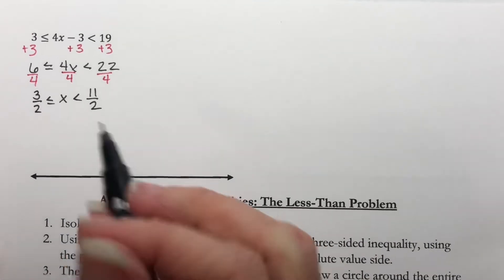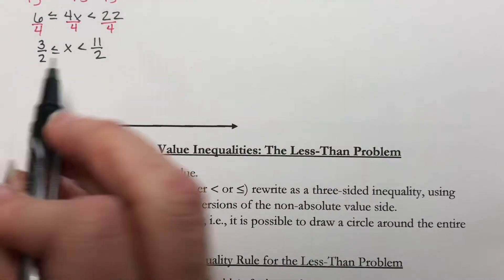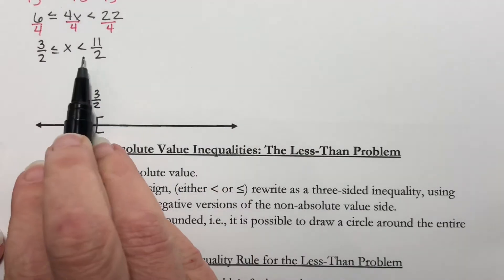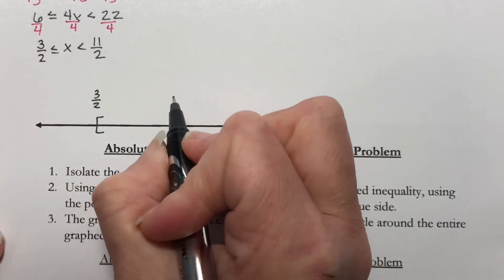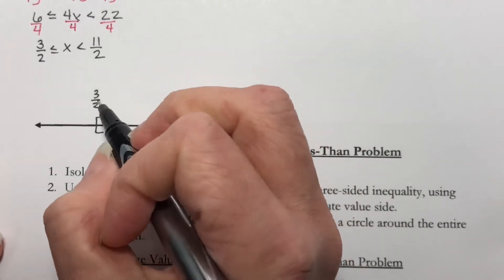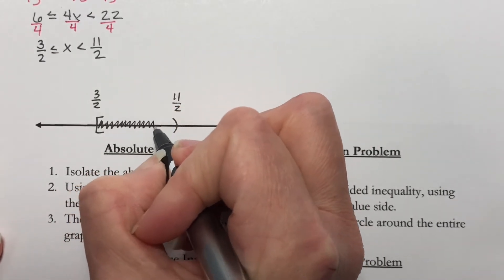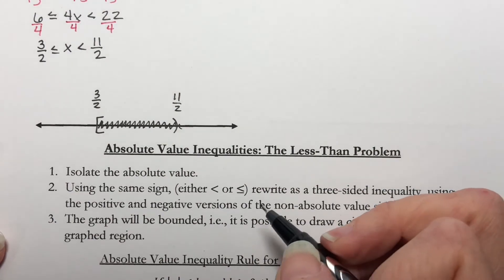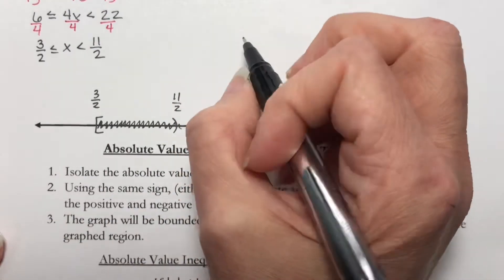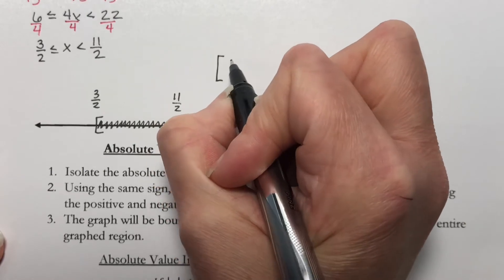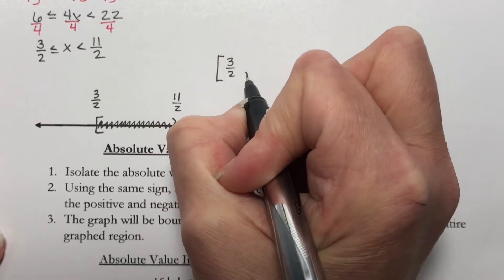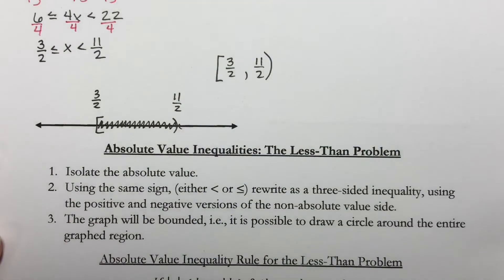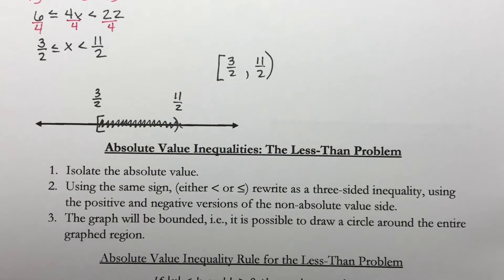So what do I have here? I have a bracket with the 3 halves, parentheses with the 11 halves, and I shade between them. So my answer in interval notation would be bracket 3 halves, comma, 11 halves.